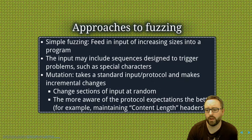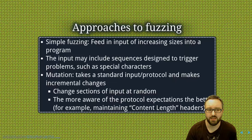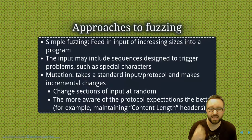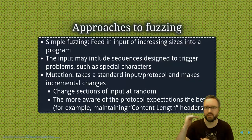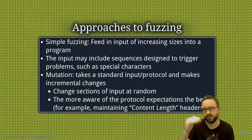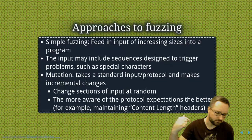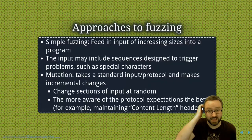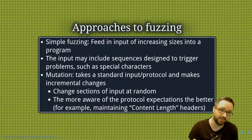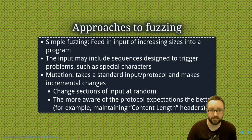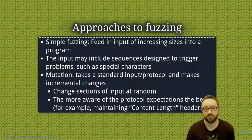The more aware the fuzzer is of the expected behavior, and the closer it conforms to that, the more likely it's going to be successful because you'll hit more parts of the code. If you've got a nested if statement, you can't test what's nested within it unless you get past that first condition. It can be helpful to have the source code when fuzz testing, because some bugs are subtle enough that you won't notice them by looking at the code, but a fuzz testing script might find them.